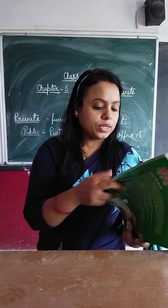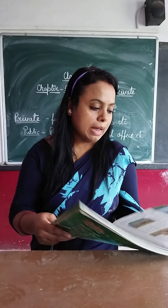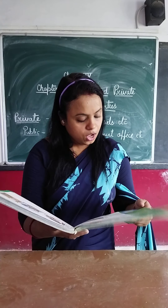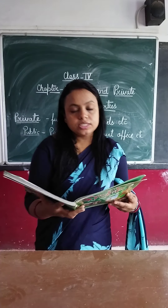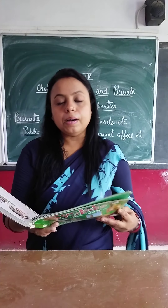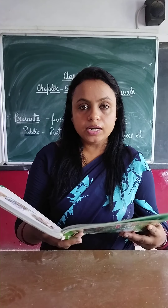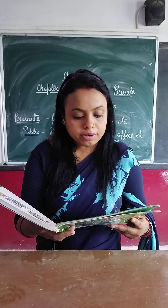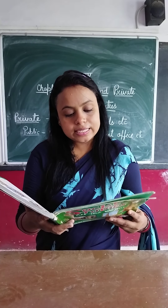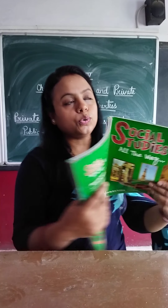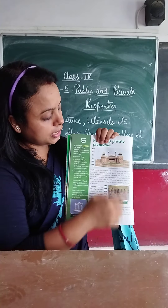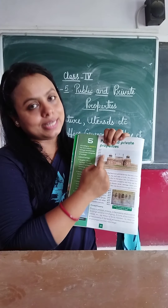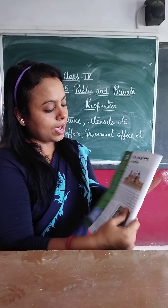Let's get started with chapter number 5. Open page number 30. Chapter 5 is about public and private properties. Rajat went to visit the Red Fort with his family, and you can see on page number 30 — this is Red Fort at Delhi.